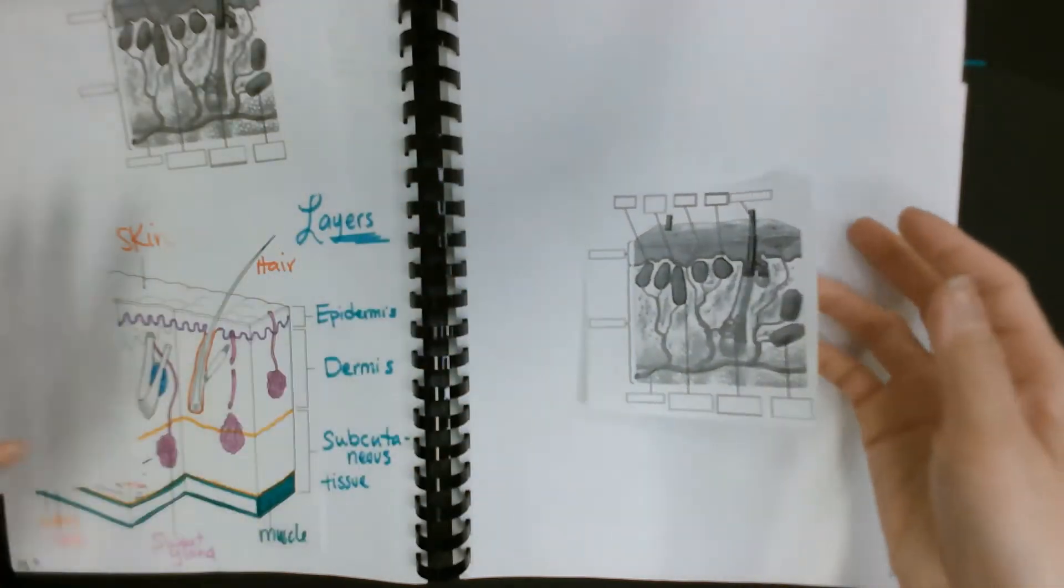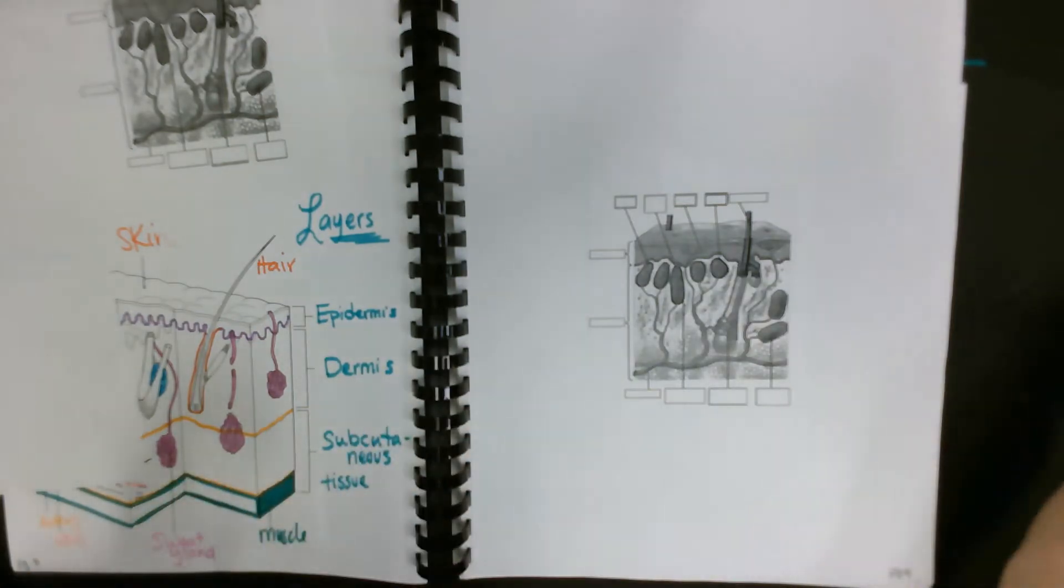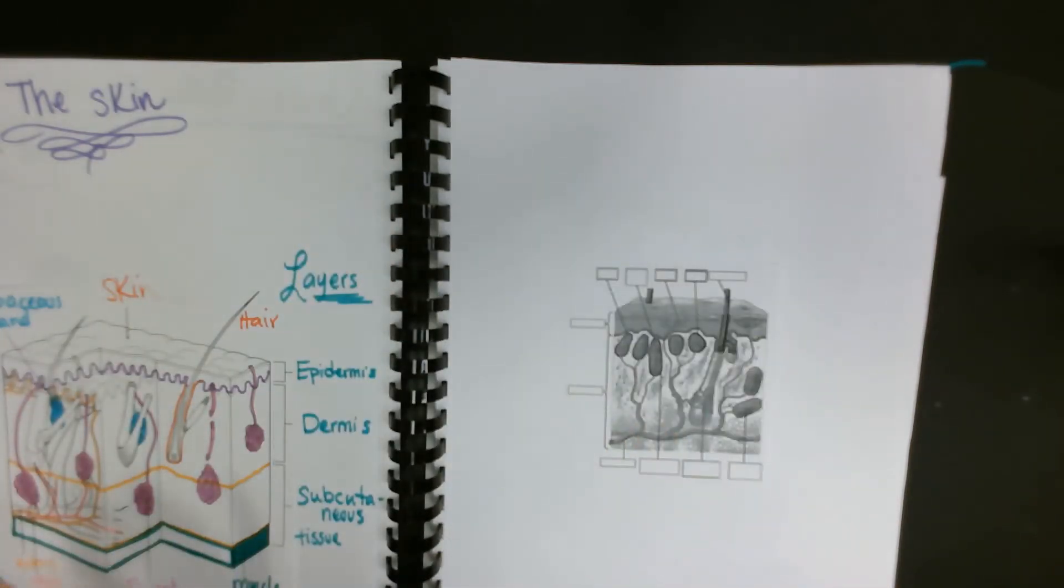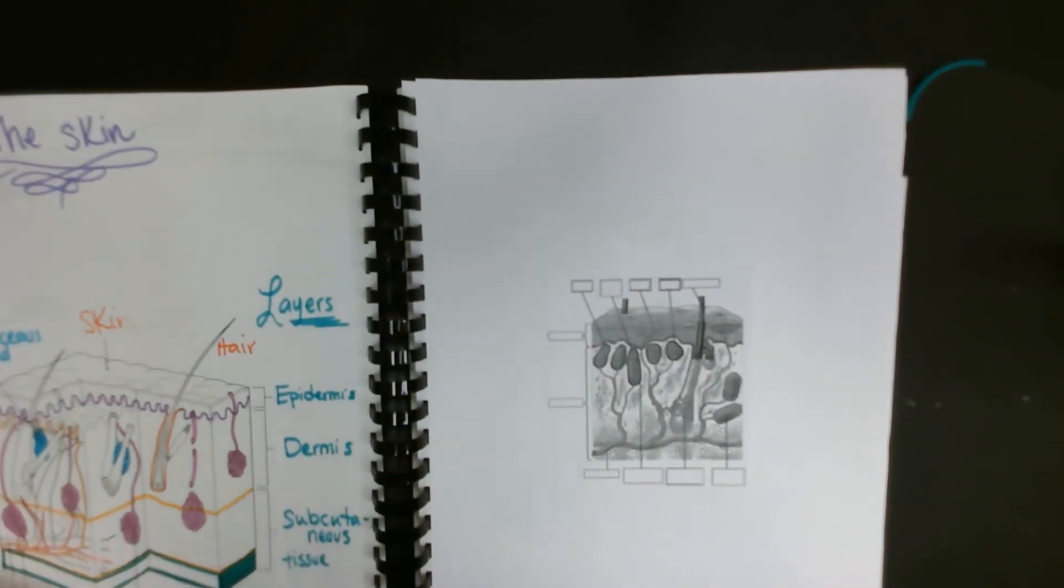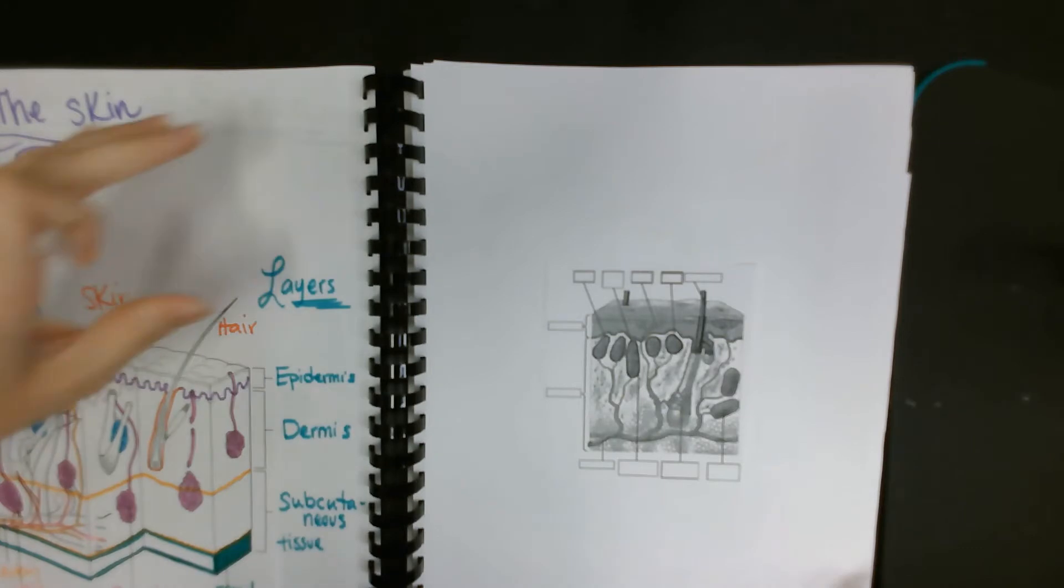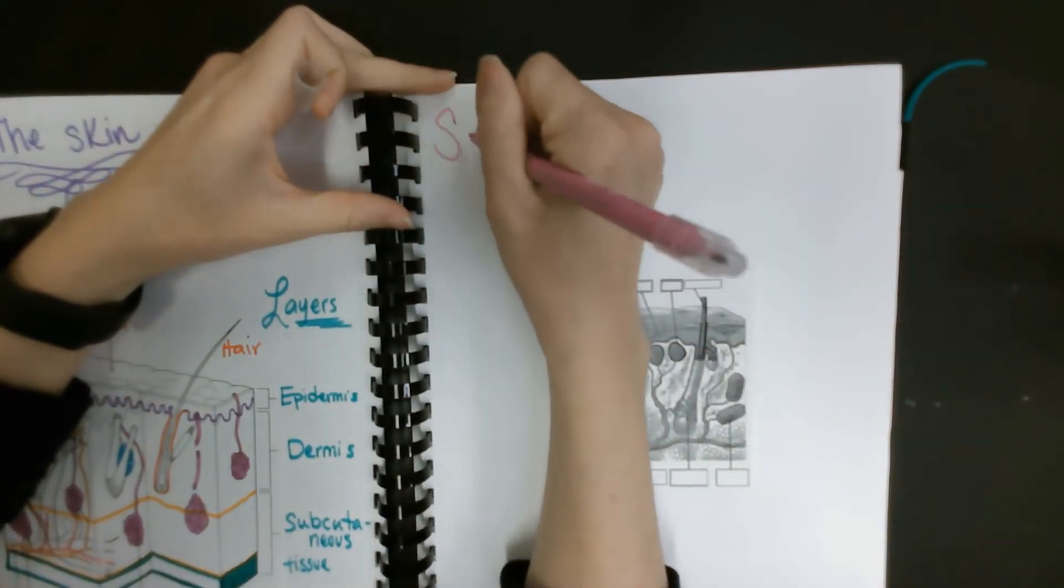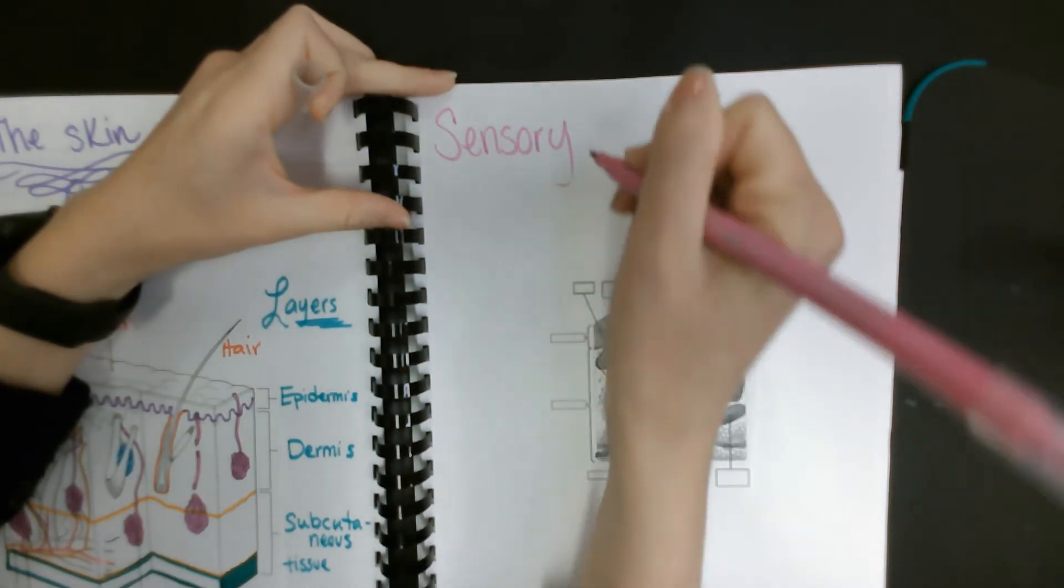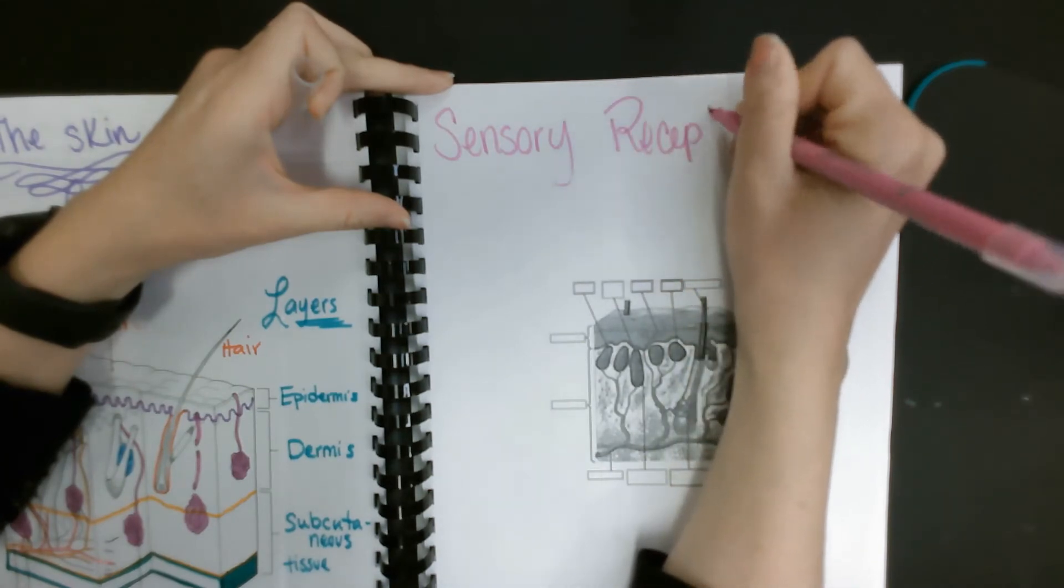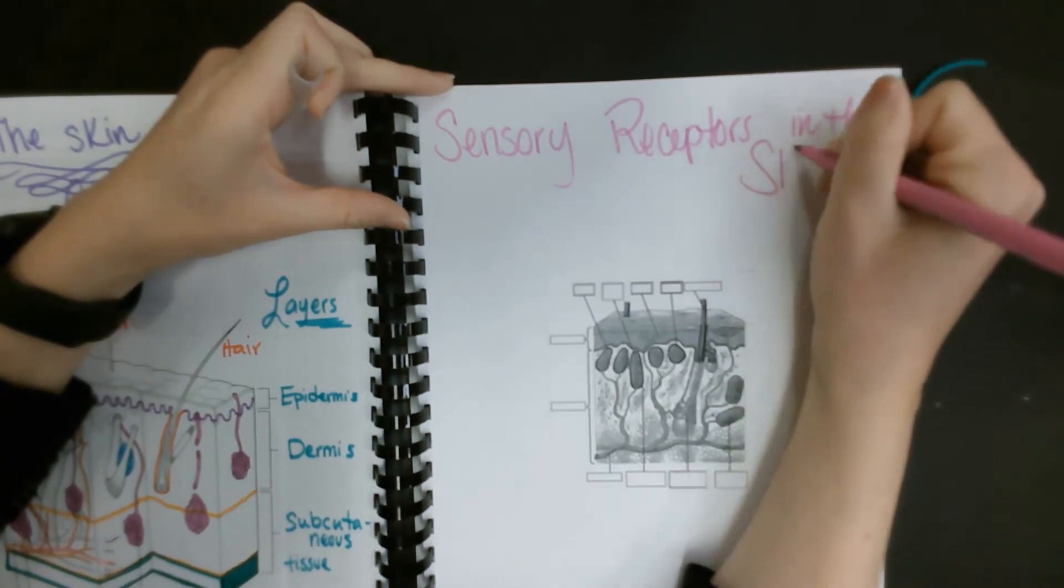My glue stick was dried out so I had to tape my page down. You can just throw the second one off to the side because we're not going to be needing that. We're going to title this page number nine: Sensory Receptors in the Skin.